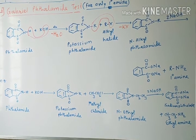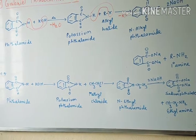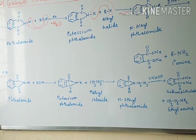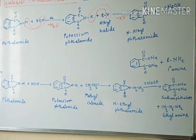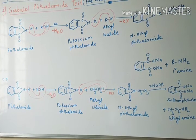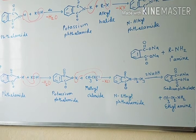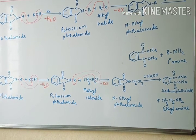Now see the example. In the example, phthalamide is treated with KOH to form potassium phthalamide. This potassium phthalamide then reacts with ethyl chloride.